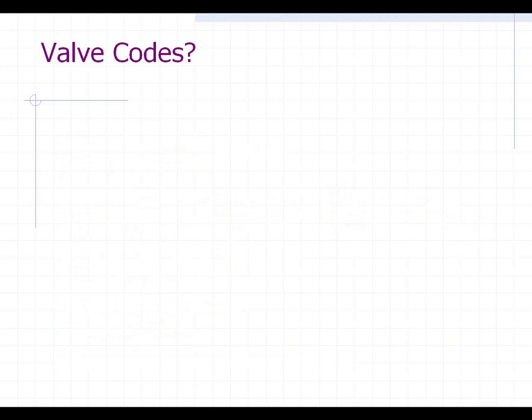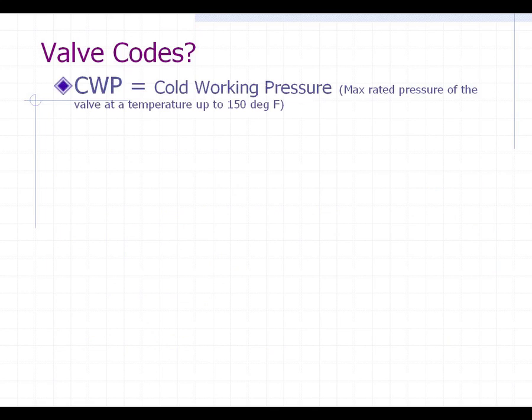Valve codes — this is going to discuss the nomenclature that we see on the castings of valve bodies, in valve specs, and on tags. Sometimes we don't always know what these codes mean, so that's what this section will address. CWP is the first one, and that stands for cold working pressure. This would normally be shown in a spec or stamped on the side of a valve.